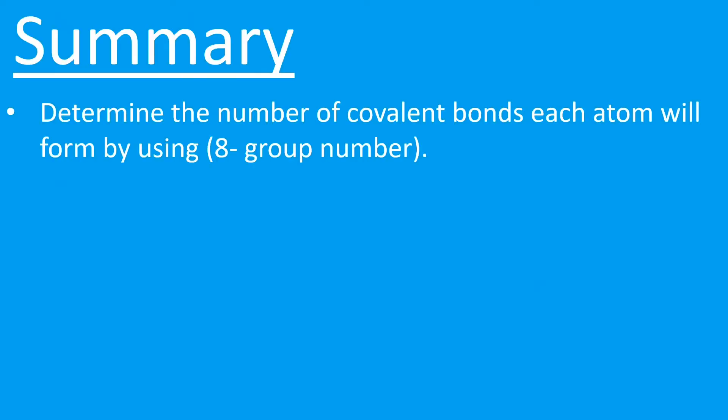To summarize then, determine the number of covalent bonds that each atom is going to form. We can just use the group number and do 8 minus the group number. For example, something in group seven: 8 minus 7 is 1—that will form one covalent bond.